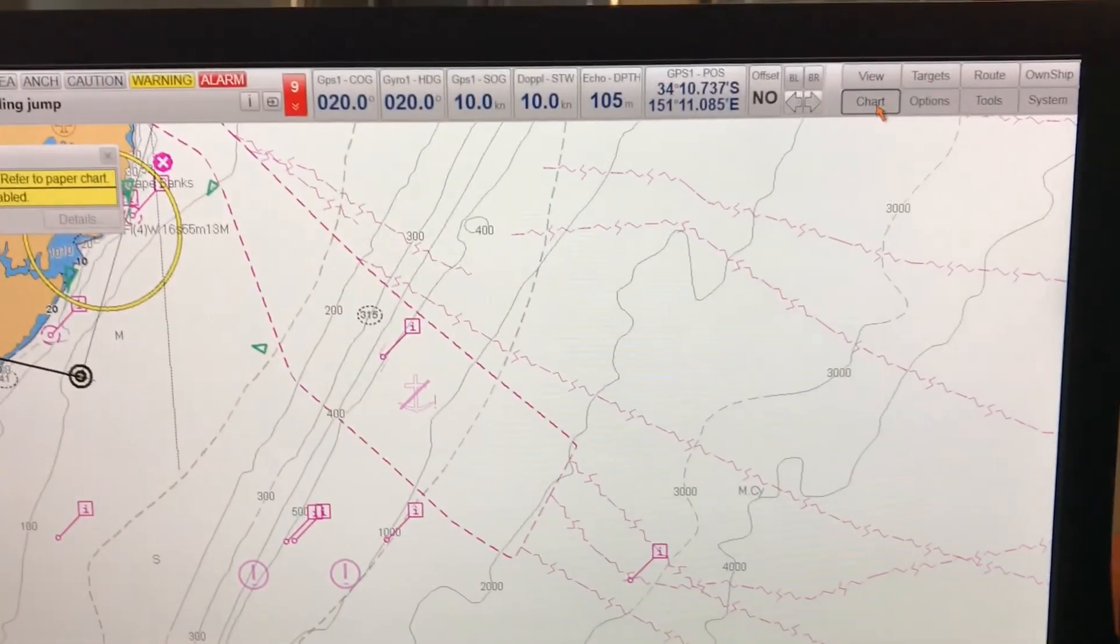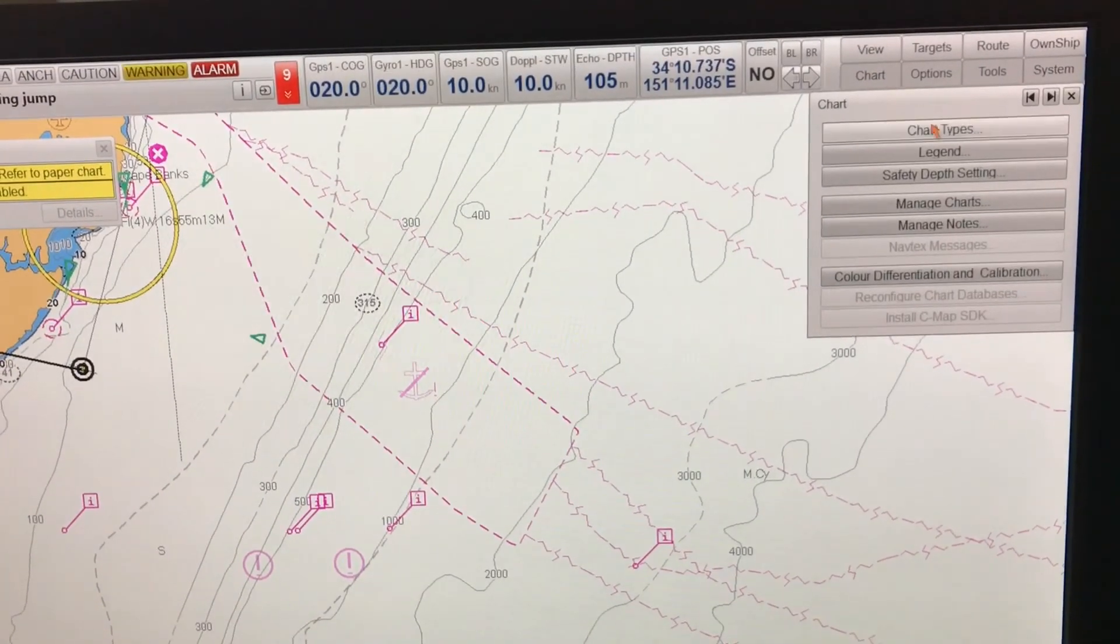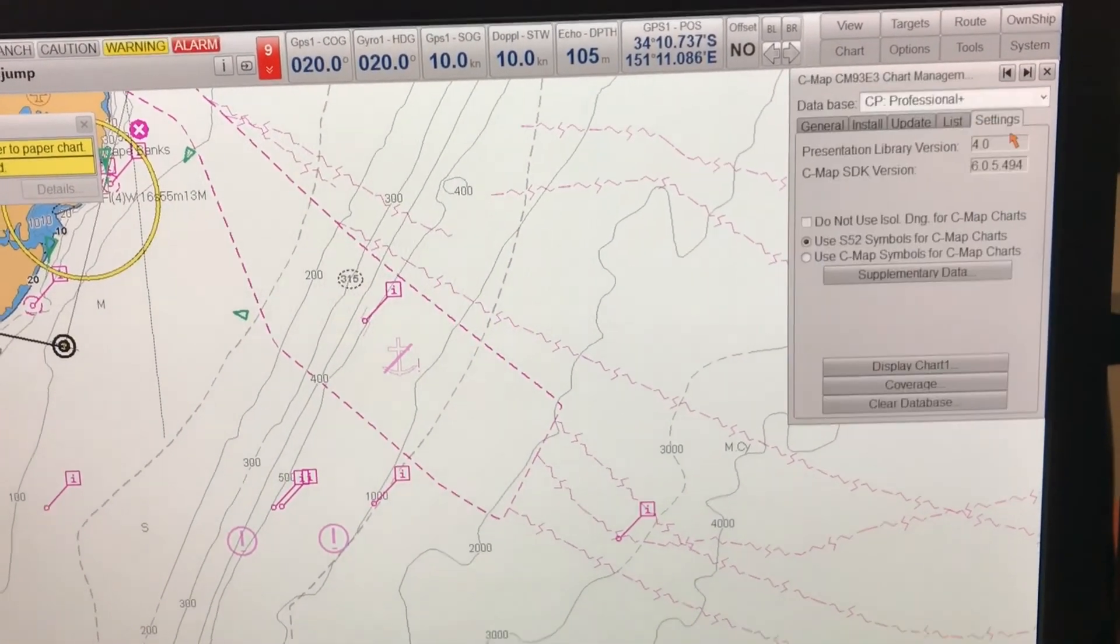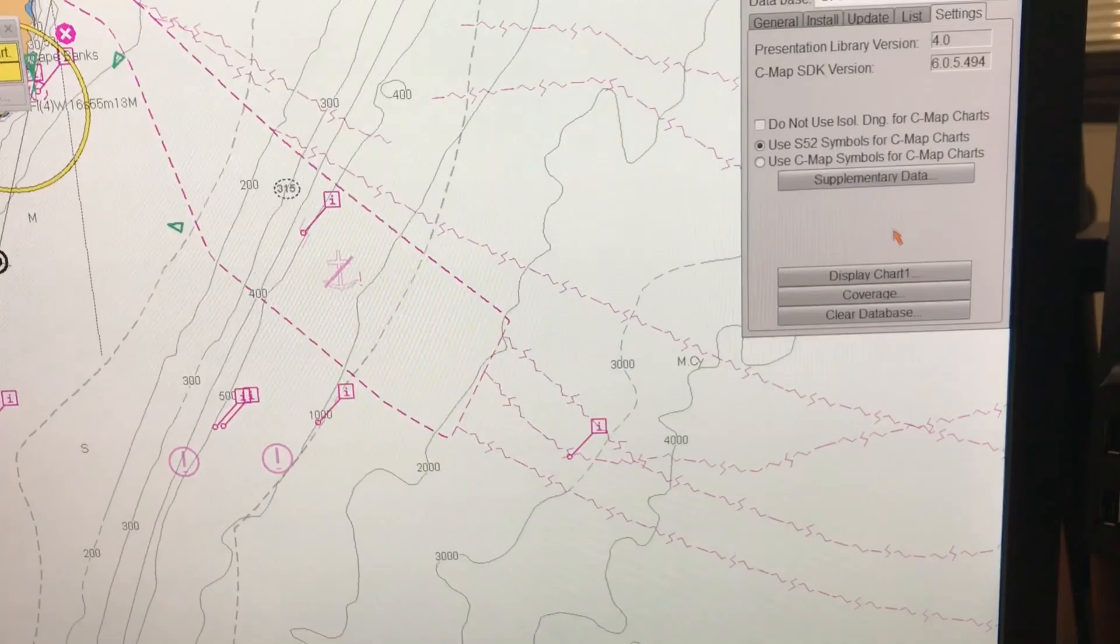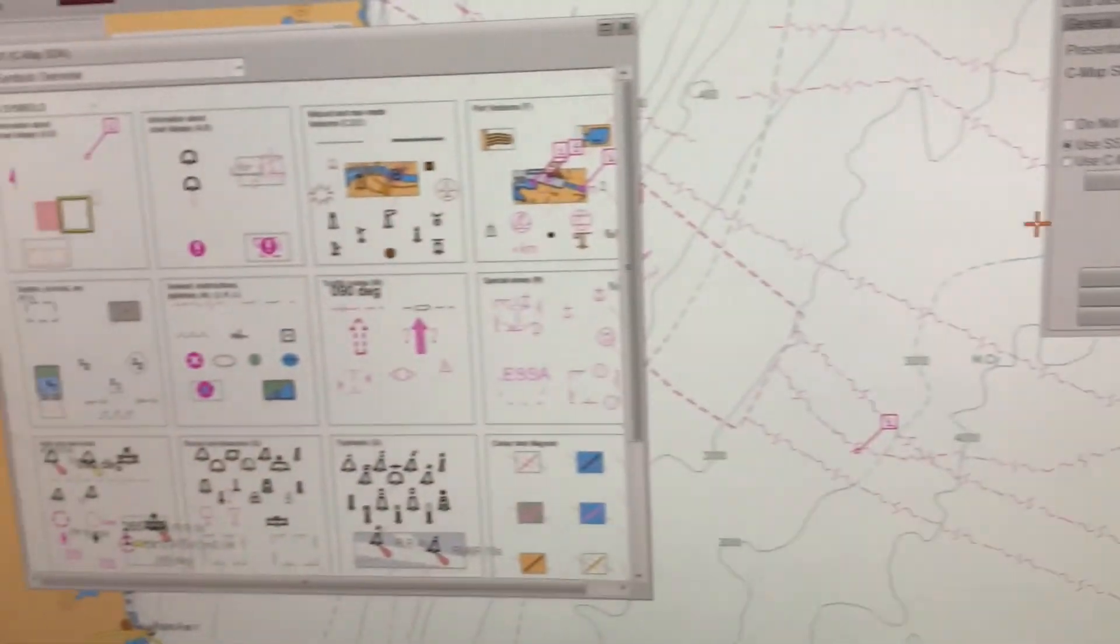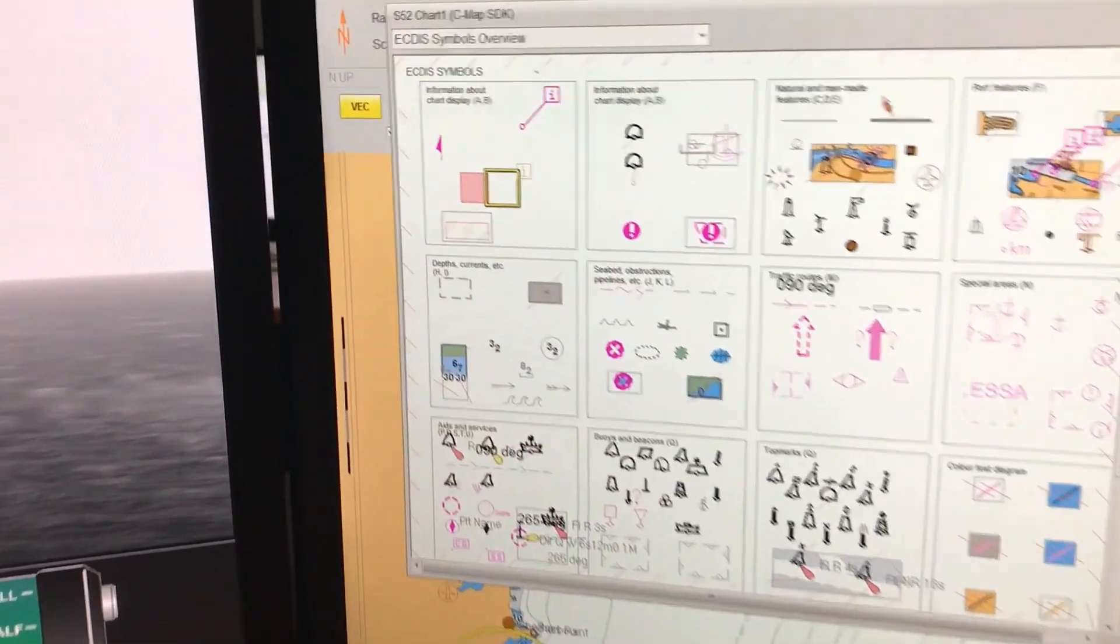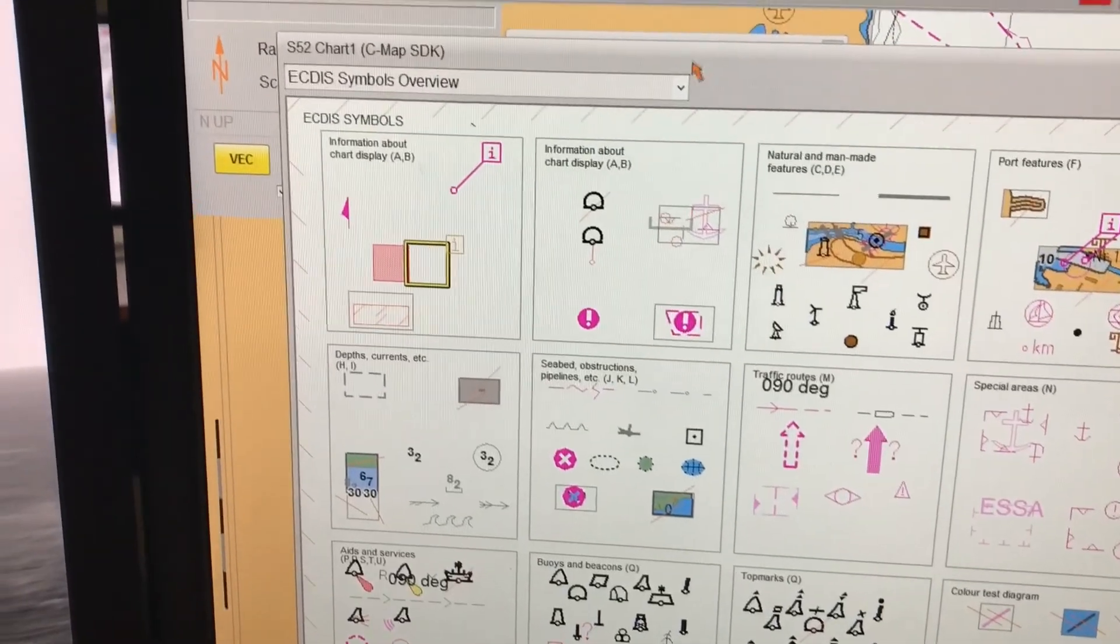To find the symbols for chart correction, go to chart, go to chart types database, select the database and select manage, then just go to display chart and you will find the list of symbols here.